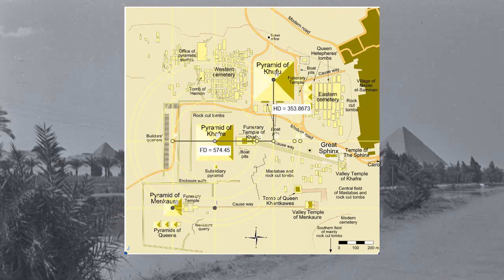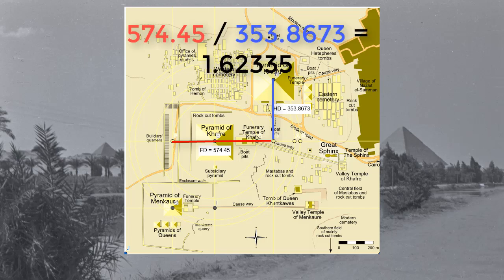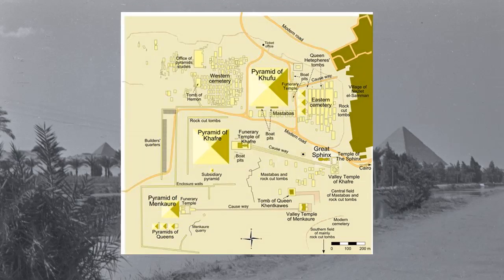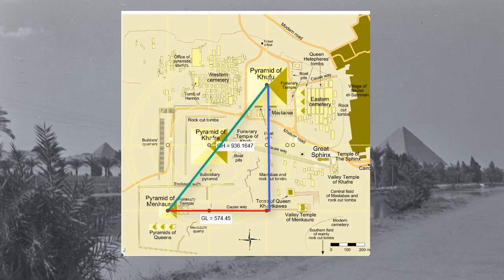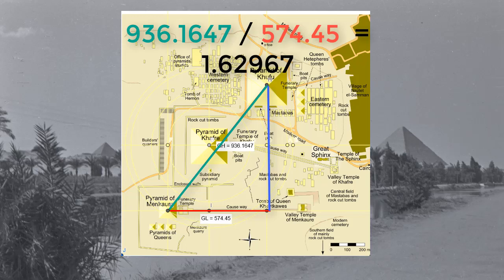Next, if we take the horizontal difference between the centers of the Great Pyramid and Menkara, or 574.5 meters, and divide by the vertical distance between the centers of the Great Pyramid and Khafre, 354, we get 1.623. Finally, if we draw a line east from the center of Menkara and a line south from the center of the Great Pyramid, we find our Phi triangle once again. The base of this triangle is 574.5 meters, and the hypotenuse is 936 meters, giving us 1.63.